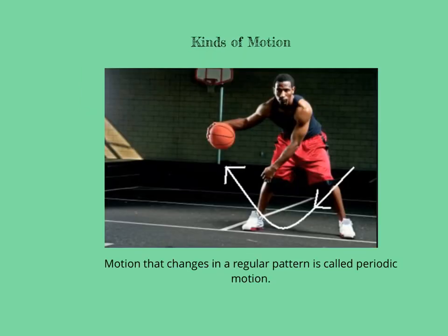Sometimes motion has a pattern, like when you dribble a basketball. You push the ball down, it hits the ground and bounces back up to your hand. Then you push it again and it goes back up, again and again. It is following a pattern. Motion that changes in a regular pattern is called periodic motion. You can also see periodic motion in a rocking chair or swing set.